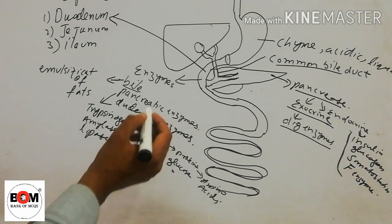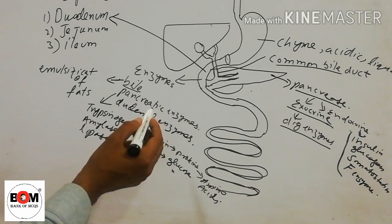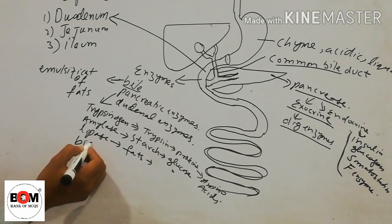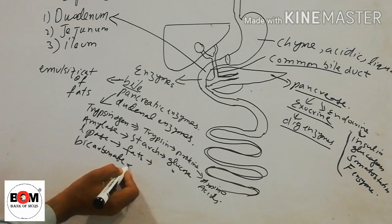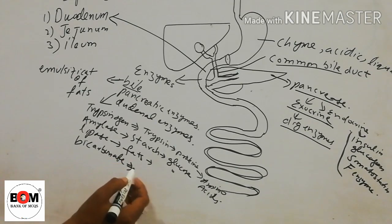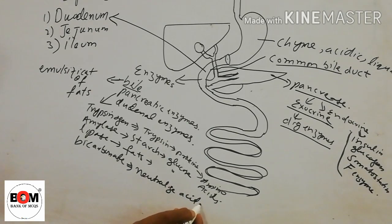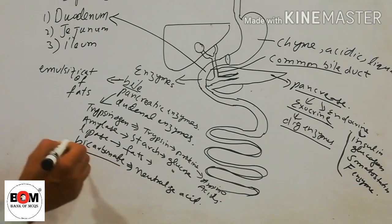The pancreas also releases bicarbonate. The function of bicarbonate is to neutralize the acid. The acid which comes from the stomach is neutralized by bicarbonate.